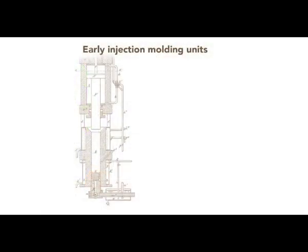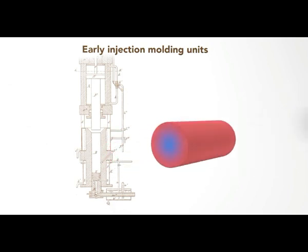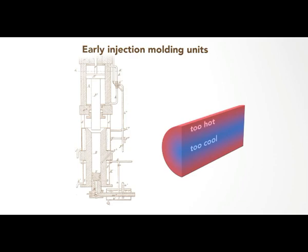Before the mid-20th century, injection molding machines used only external heating of the barrel to melt the plastic before a plunger injected the molten material. But because plastic conducts heat poorly, the temperature was uneven in the barrel. Either the middle was too cool and not fully melted, or the outer regions were too hot and degraded the plastic.